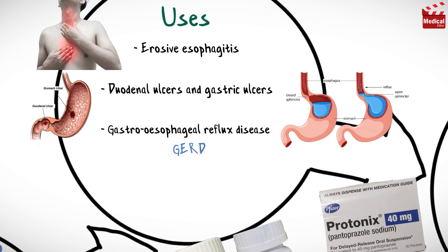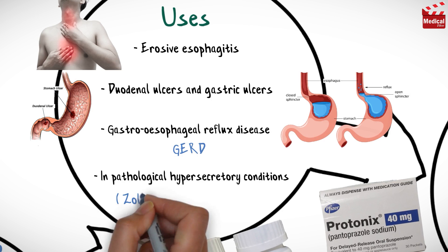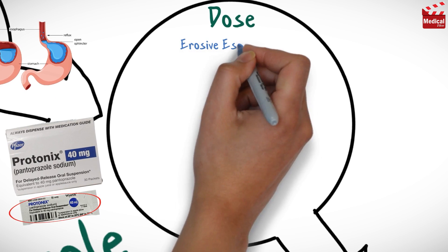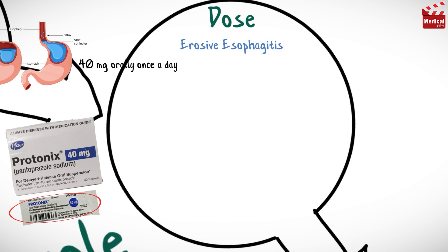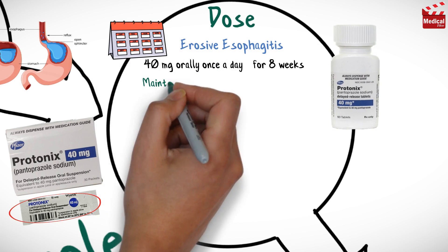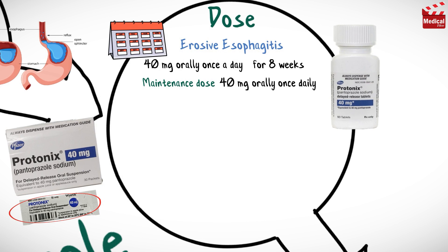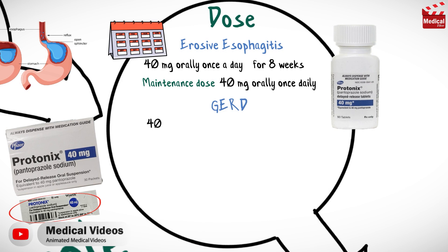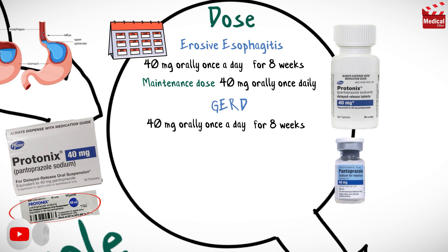It is also used in pathological hypersecretory conditions including Zollinger-Ellison syndrome. The usual dose for the treatment of erosive esophagitis is 40 milligrams once a day for 8 weeks, and the maintenance dose is 40 milligrams once daily. For GERD, the usual dose is also 40 milligrams once a day for 8 weeks.